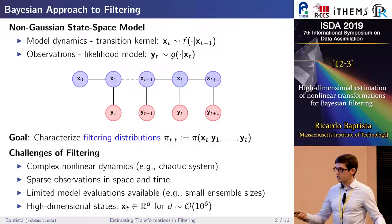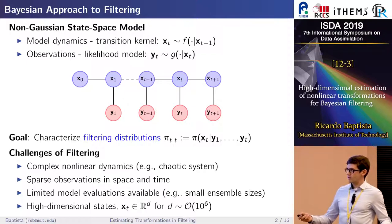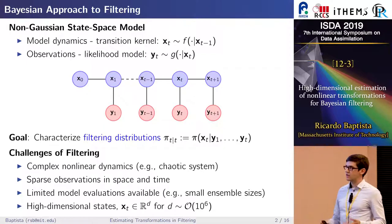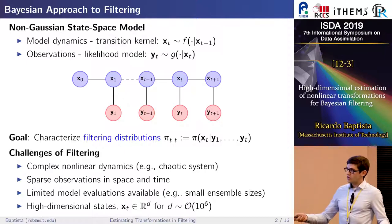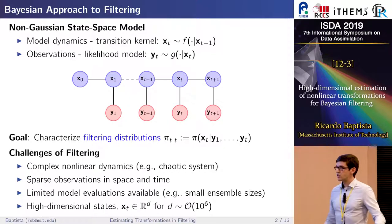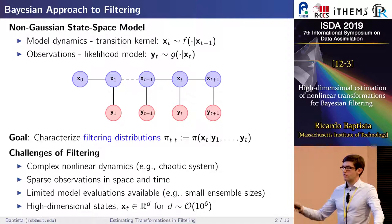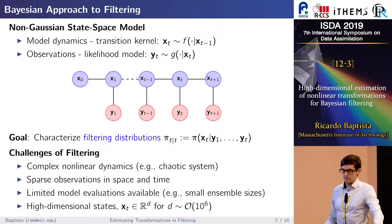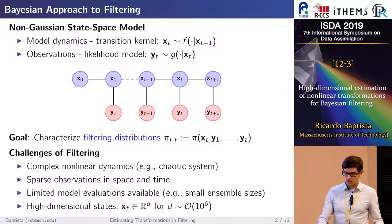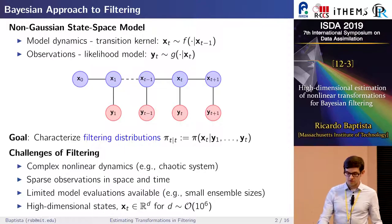There are many challenges for this problem. These include very complex nonlinear physics such as chaotic systems, very sparse observations in space and time, as well as two challenges we focus on today: very high-dimensional states where dimension D is often on the order of 10^6, and working with very limited model evaluations — often using ensemble Kalman filters with very small ensemble sizes relative to the problem dimension.